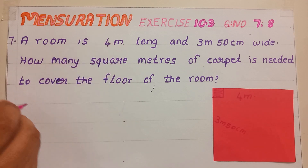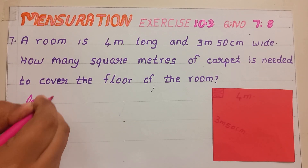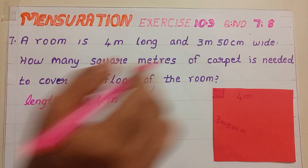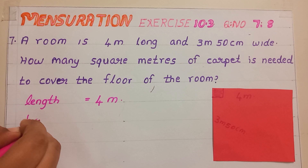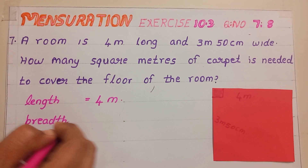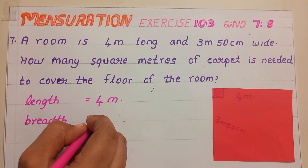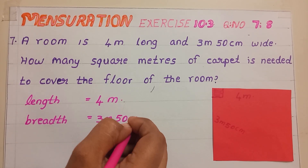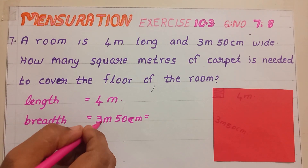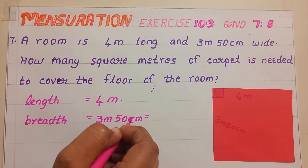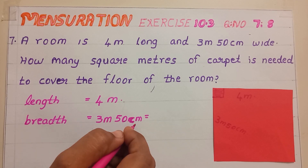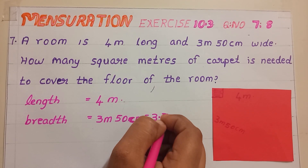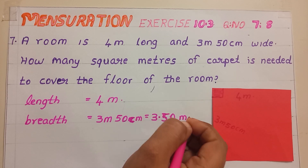So, for that, the first step is: Length equal to 4 meter. And breadth — width means breadth itself — breadth equal to 3 meter 50 centimeter. This again can be written differently. See, one value is in meter and the other is in centimeter, so both should match — we should convert this centimeter into meter. After converting, we will be getting 3.50 meter.